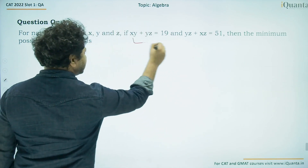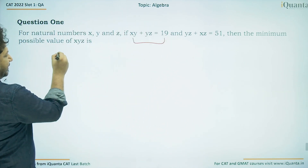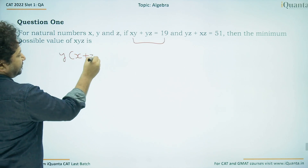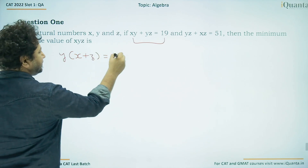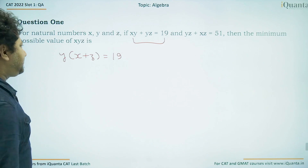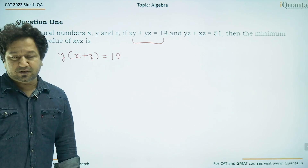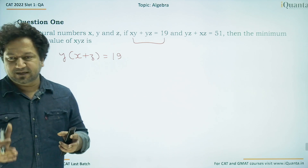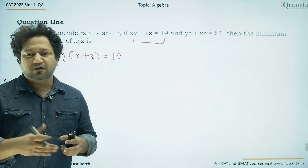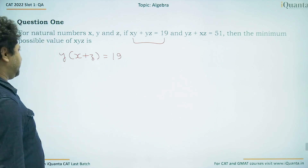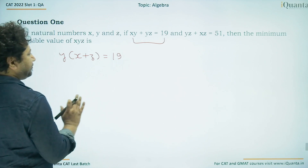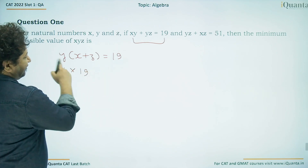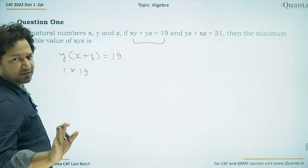Let us take this expression first. We can take y common; in the bracket we will have x + z, so y(x + z) = 19. As we can see, 19 is a prime number. To write it as a product of two numbers, we can only have one possibility: 1 × 19 or 19 × 1. So if I write 1 × 19, then y = 1 and x + z = 19. That is possible.